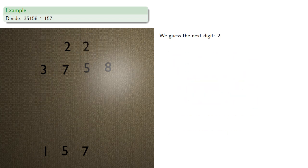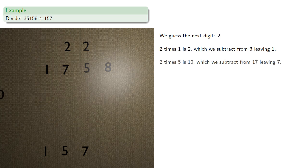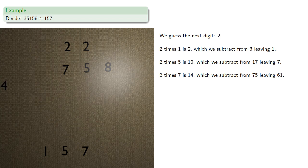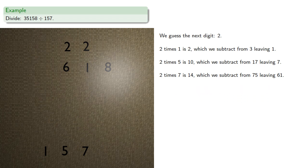Upper commands the lower. 2 times 1 is 2, which we subtract from 3, leaving 1. 2 times 5 is 10, which we subtract from 17, leaving 7. And 2 times 7 is 14, which we subtract from 75, leaving 61. And shift.